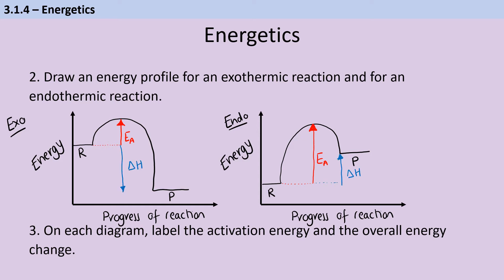For an endothermic reaction, it's going to go up and we can label that as delta H. We can use the sign of delta H to tell us from a calculation whether a reaction is exothermic or endothermic. For an exothermic reaction, you get a negative value and for an endothermic reaction, you get a positive value.